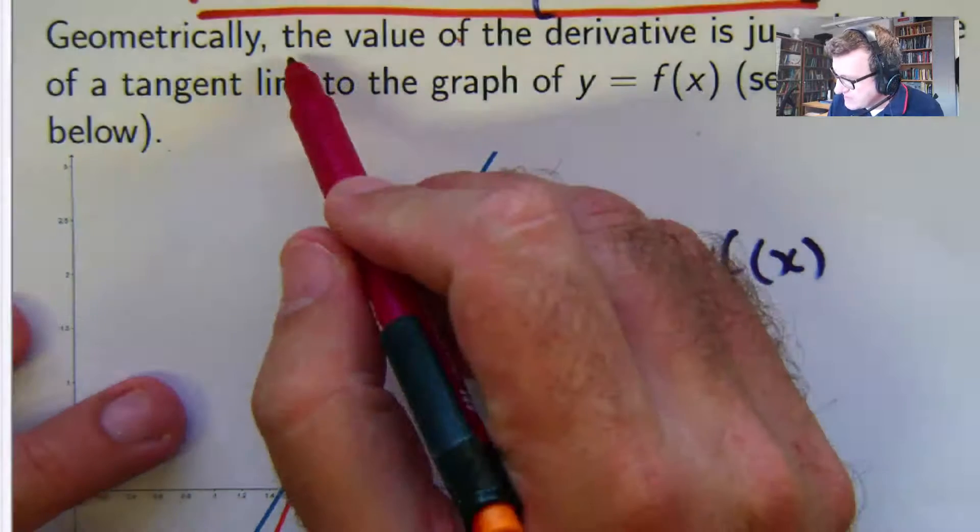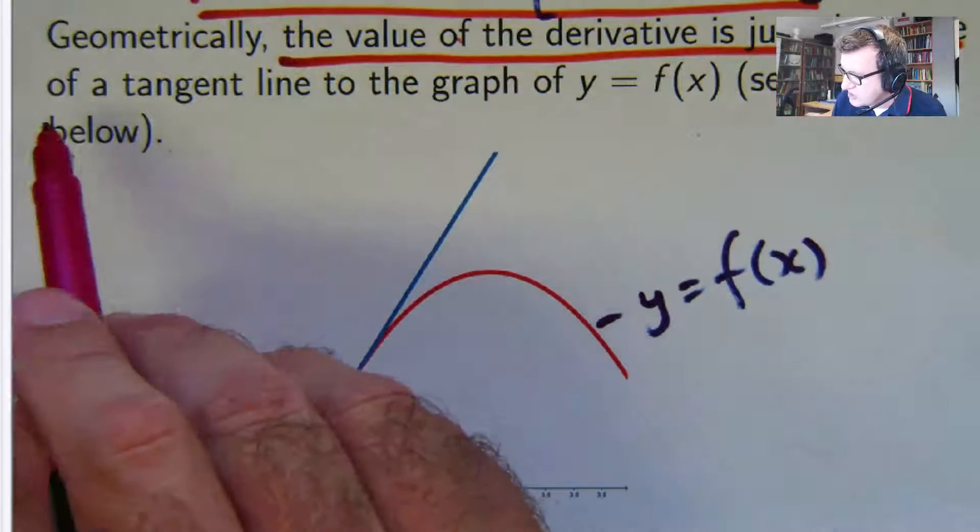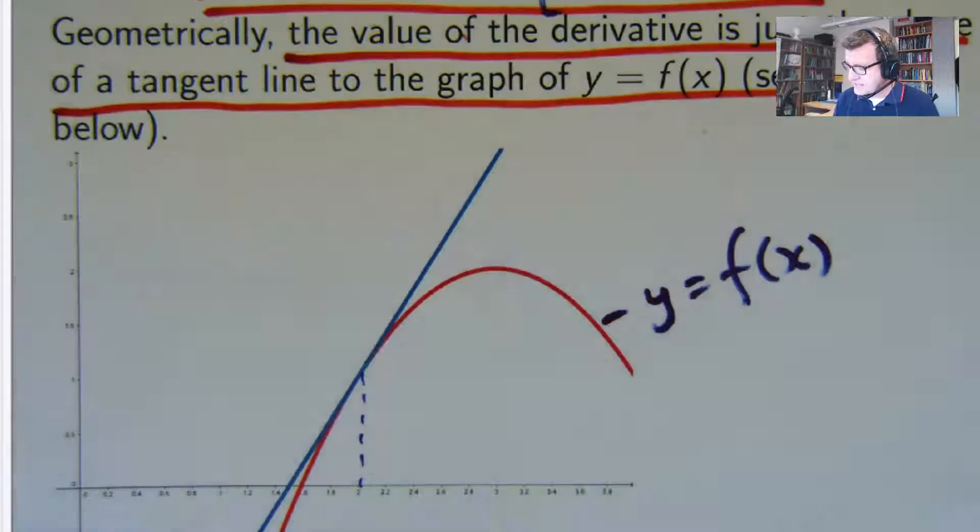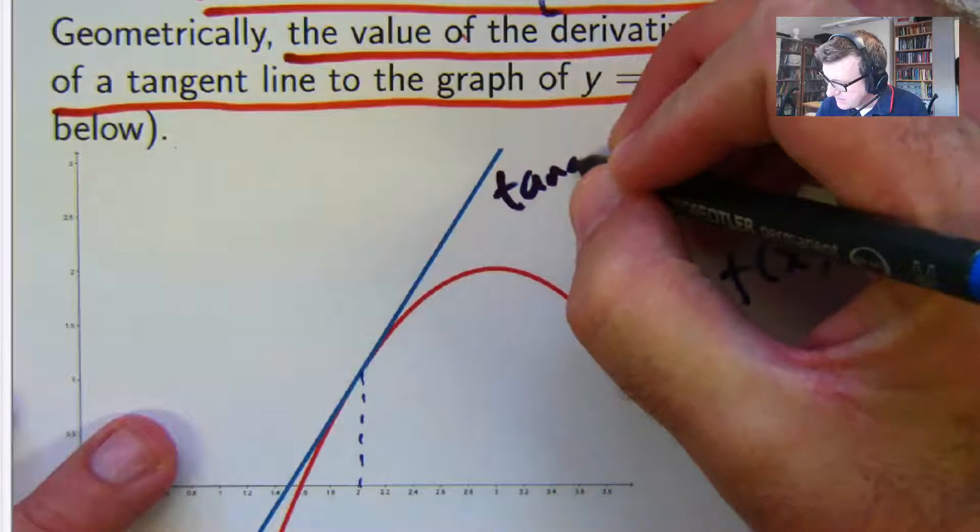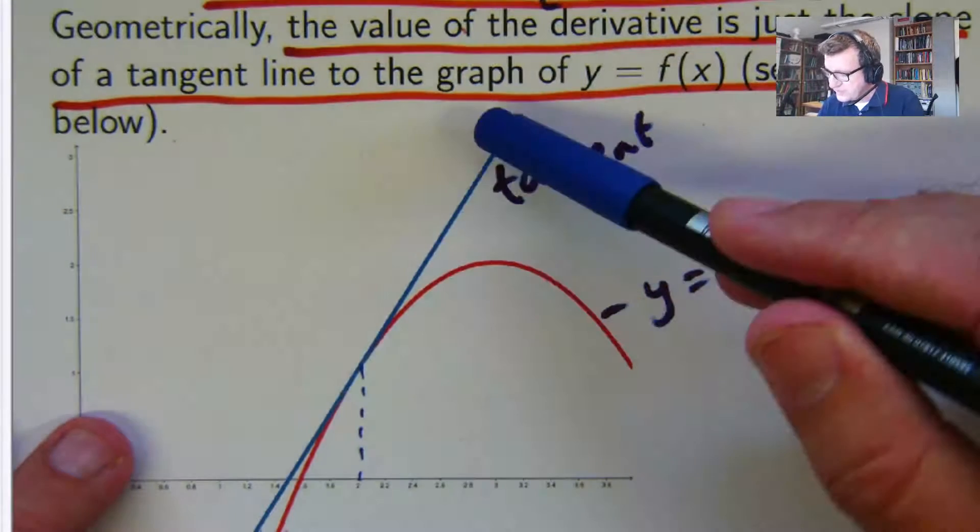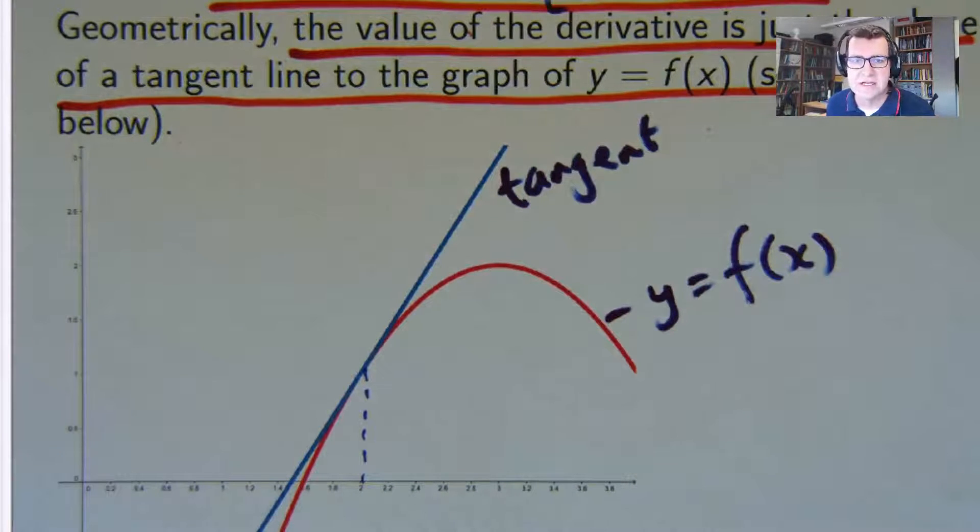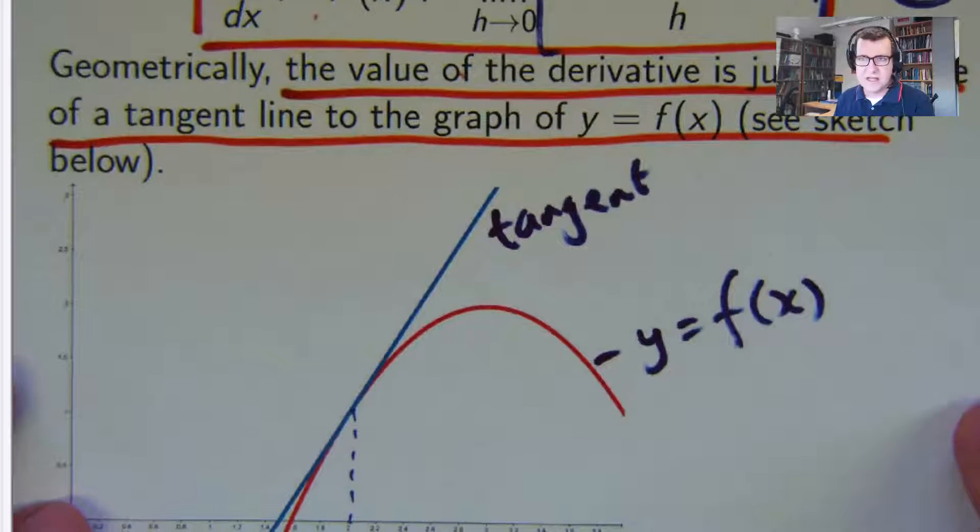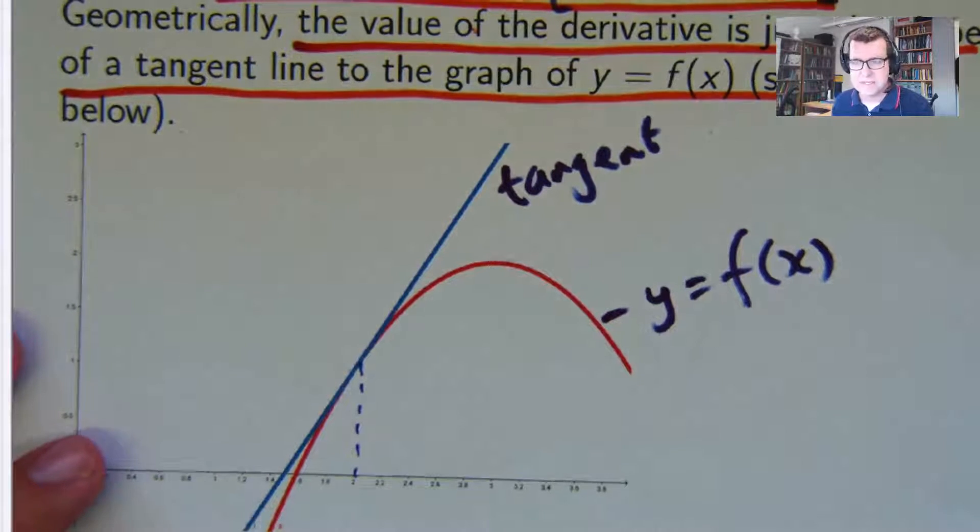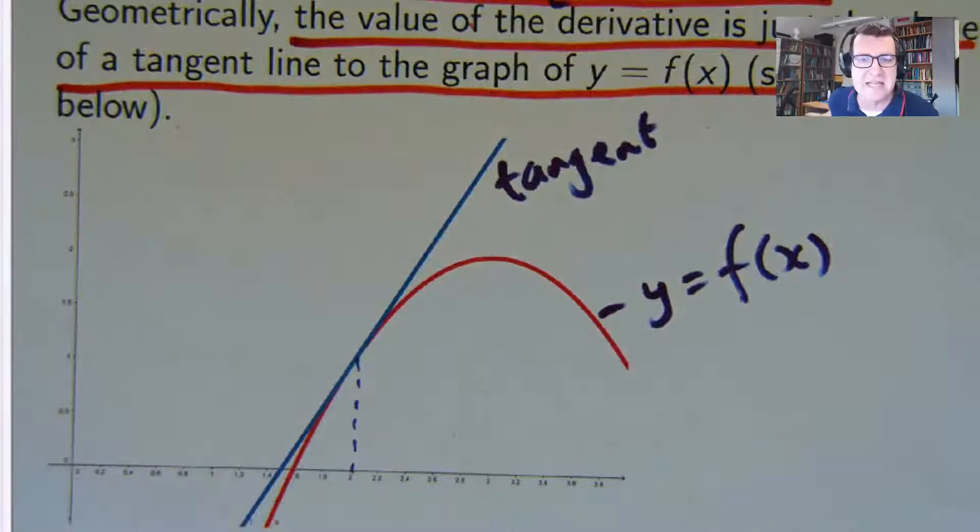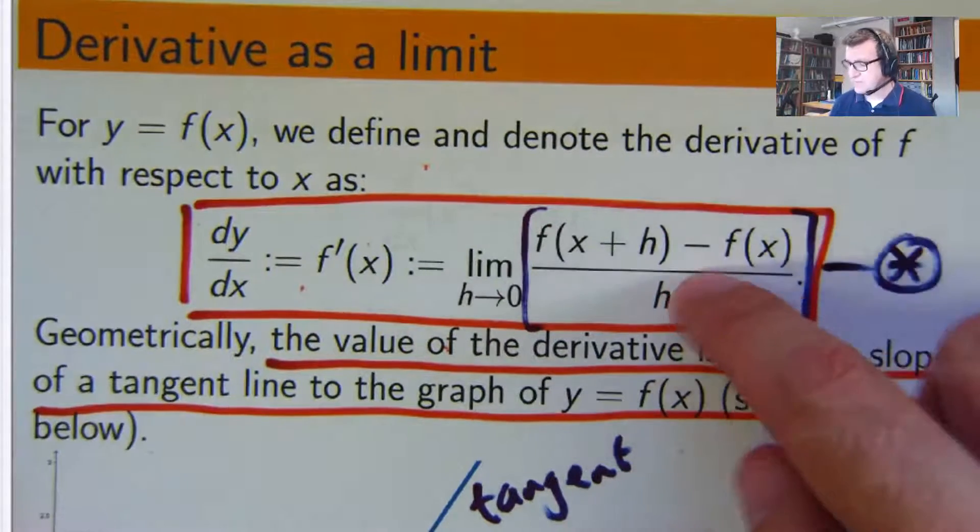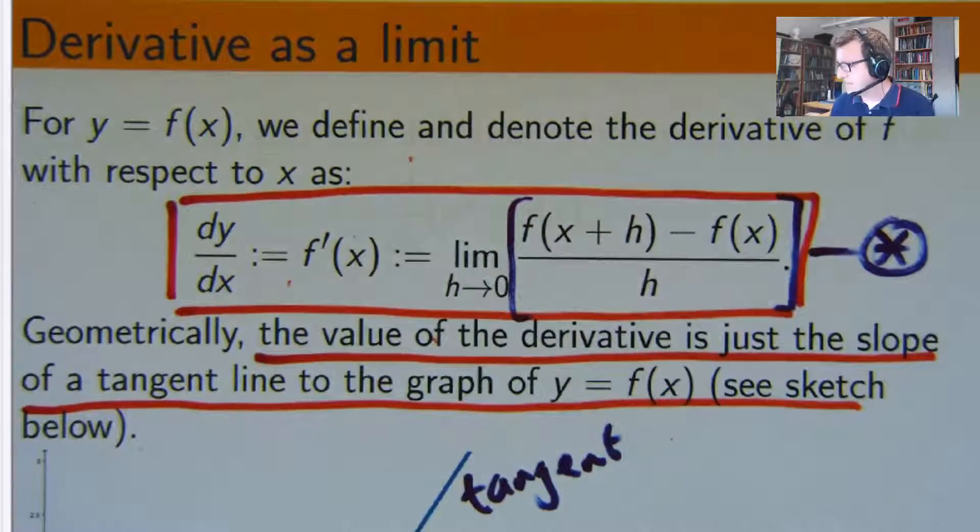The derivative of a function is just the slope of a tangent line to the graph. So in this case, here's the tangent line. The derivative at x equals 2 is just the slope of this or the gradient of this blue line. Let me say that again. The derivative of a function at a point is just the slope of the corresponding tangent line. So we're going to get back to this now. We'll do an example of how to use this limit definition of the derivative.